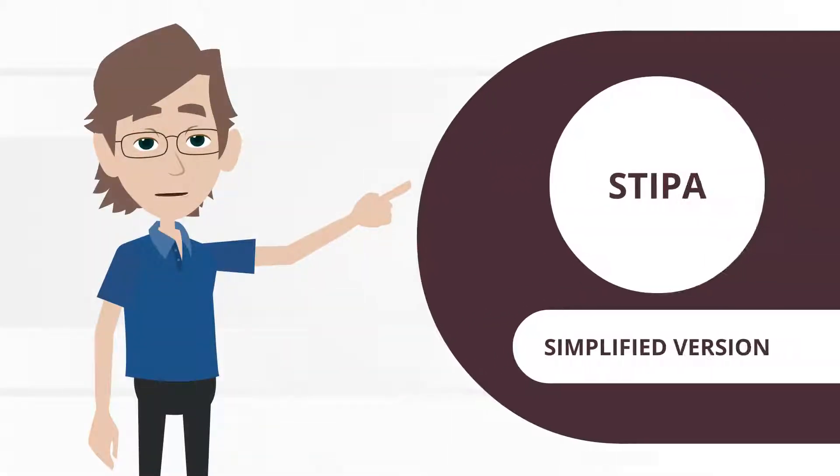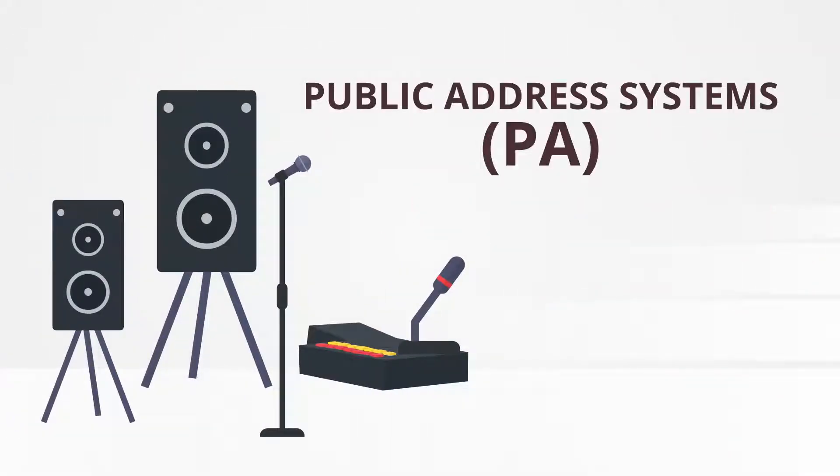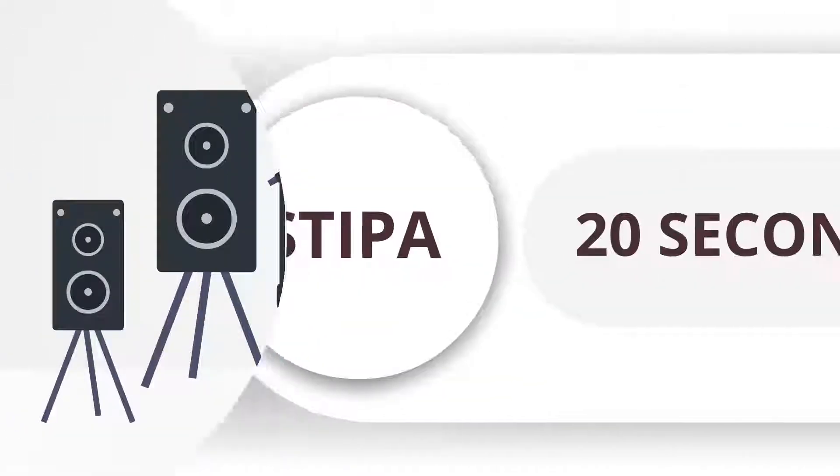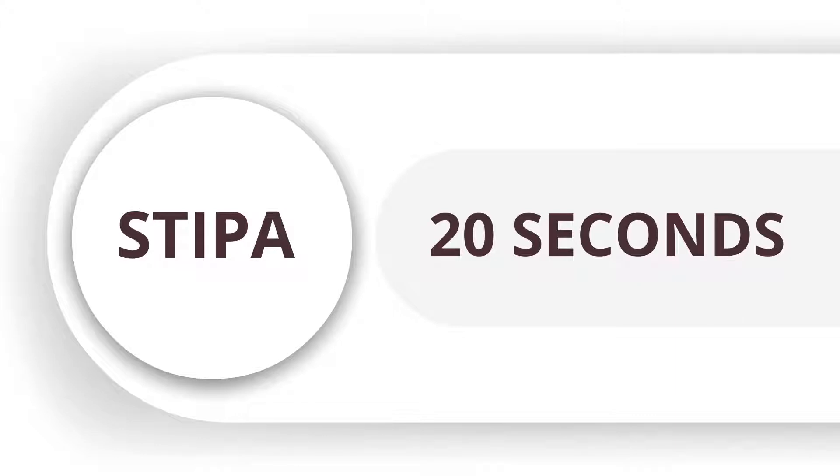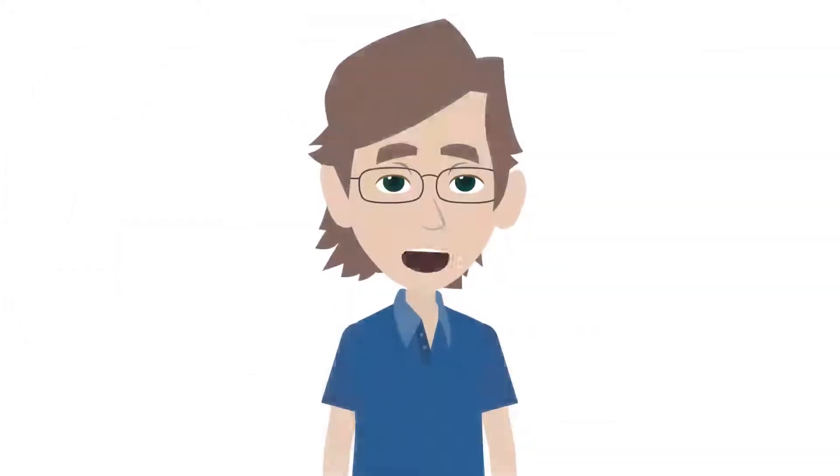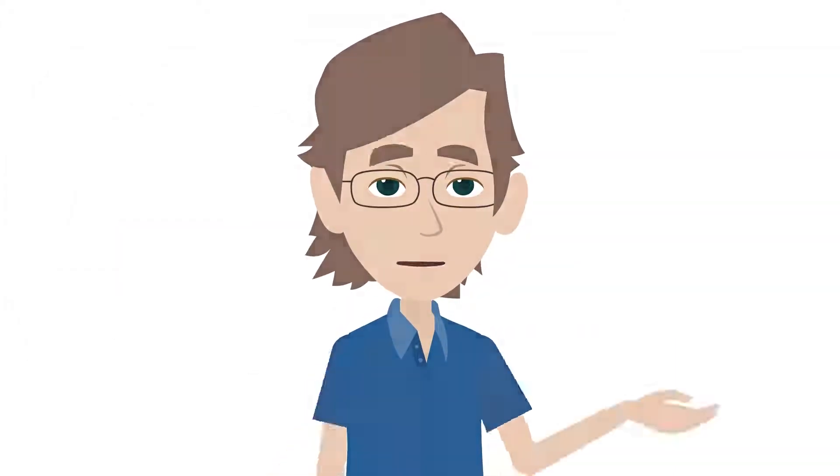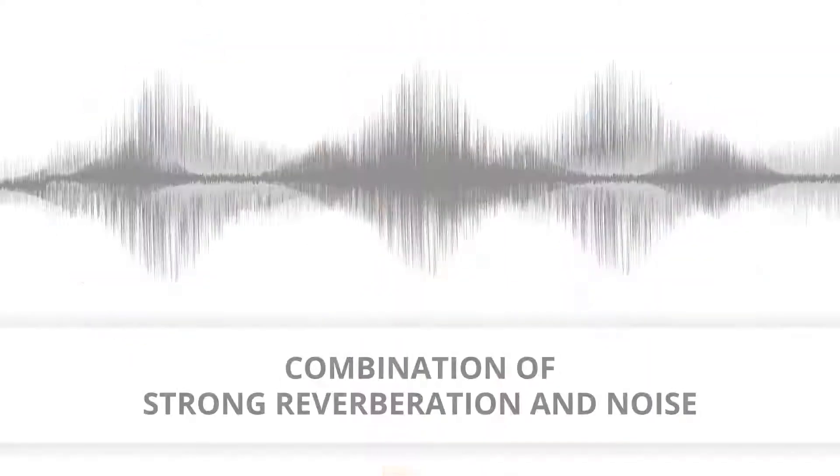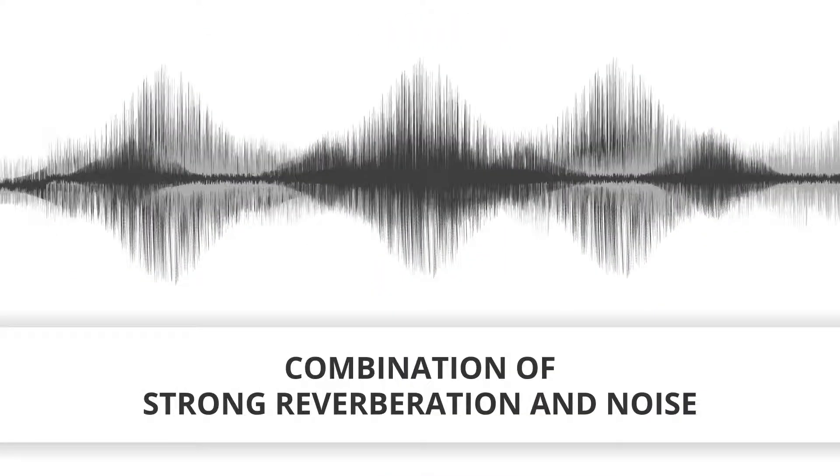STIPA is a somewhat simplified version originally made for public address systems, hence the letters PA. A STIPA measurement only takes about 20 seconds and is just as reliable in almost every situation. Just avoid STIPA if you hear echoes or if you have a combination of strong reverberation and noise.